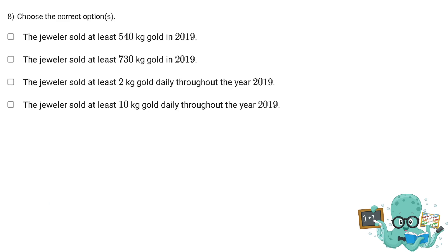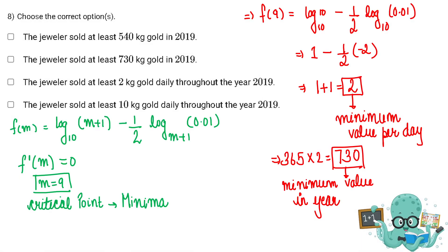The question is saying that you have to find the minimum gold that a jeweler sold in a year and in a day. Basically this becomes very easy after question number seven.